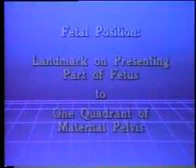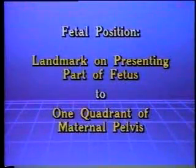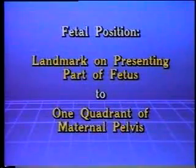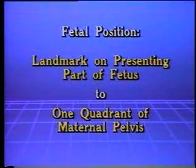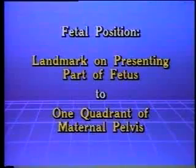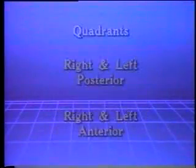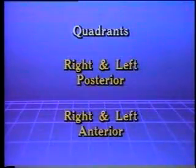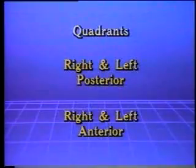Fetal position is the relationship of a landmark on the presenting part of the fetus — the occiput, for example — to one quadrant of the maternal pelvis. The quadrants are right and left posterior, and right and left anterior.